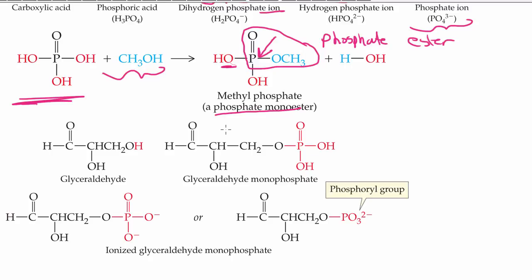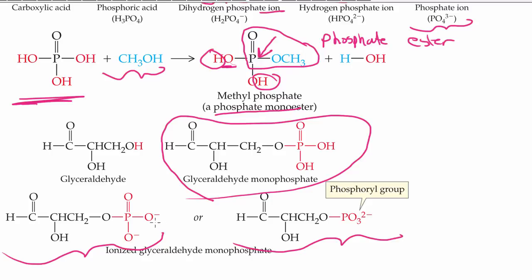They are acidic, and that's because they still contain these acidic hydrogens. Remember, the hydrogens bonded to the oxygens. So we find them in body fluids present as ions. We normally write the phosphate groups in their ionized forms. For example, for glyceraldehyde monophosphate, which is right here, you'll either see it represented like this, or like this. And this part here, where you have the phosphorus and the three oxygens, that is called a phosphoryl group.